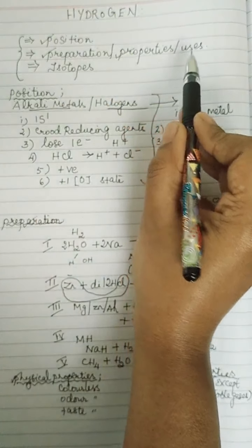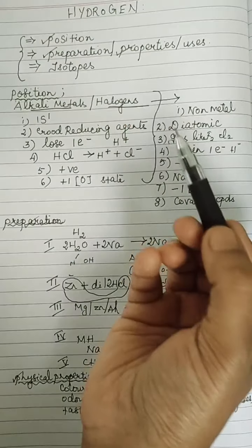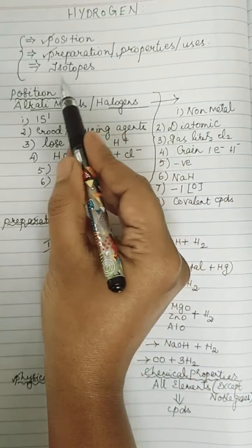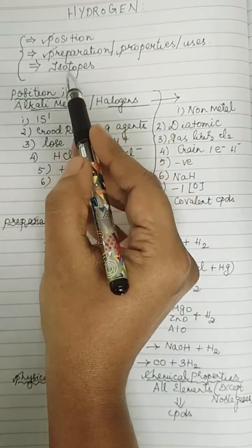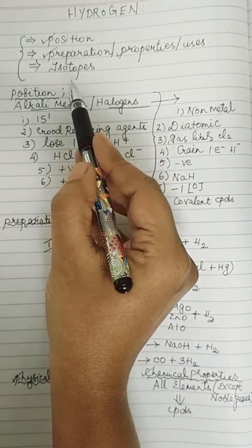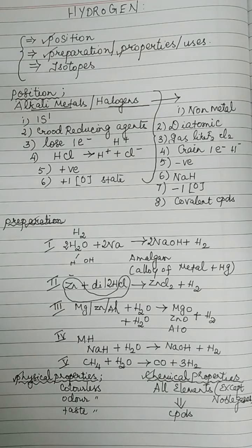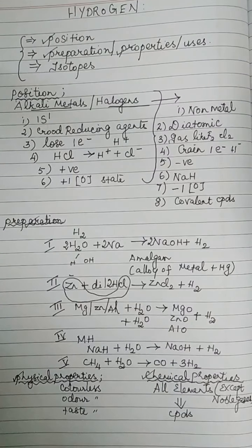Uses of hydrogen will be discussed later because it is included in the final exam. Now moving to isotopes of hydrogen. We are going to look into the isotopes of hydrogen, and for that we should also know the occurrence of hydrogen.